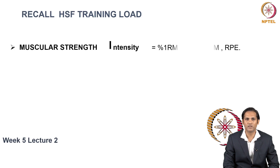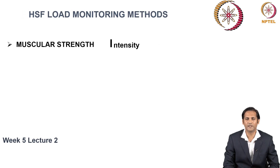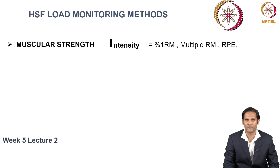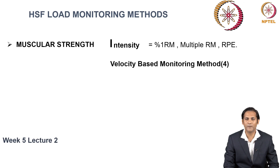For musculoskeletal training, the training load with respect to intensity is expressed as %1RM, multiple RM, or RPE. The aim is to increase musculoskeletal training by lifting as heavy a weight as possible. Traditionally, musculoskeletal training is mentioned as %1RM, where you try to use a weight in relation to the %1RM you want to lift. However, you cannot monitor the load lifted for each and every repetition and exercise, especially when there is an adaptation of improved muscular strength week by week. One method to monitor intensity when the aim is to increase muscular strength is the velocity-based monitoring method.